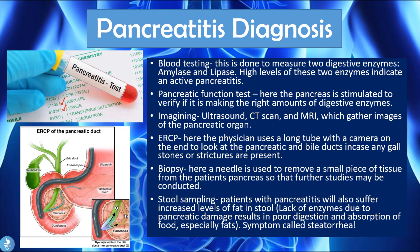For diagnosis, a blood test can measure the two digestive enzymes amylase and lipase — high levels usually indicate active pancreatitis. A pancreatic function test can verify if the pancreas is making the right amounts of digestive enzymes. Imaging techniques such as ultrasound, CT scan, and MRI gather images of the pancreatic organ; any inflammation or enlargement suggests pancreatic disease.